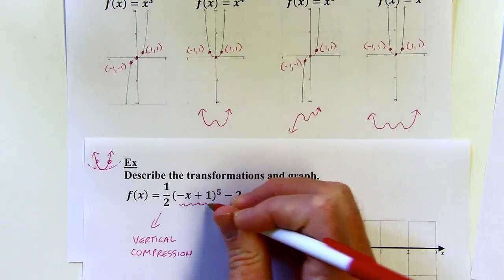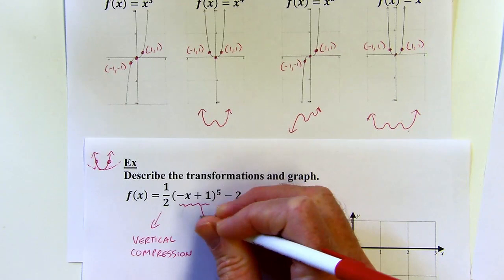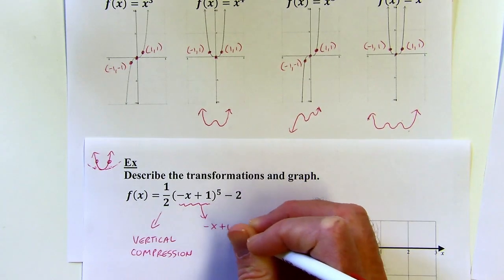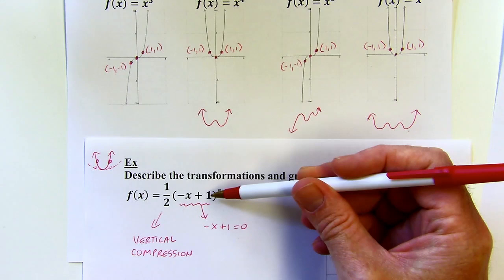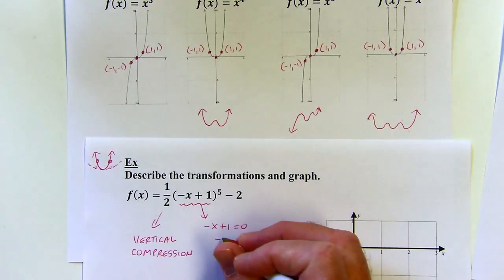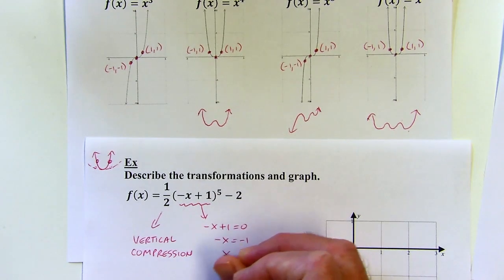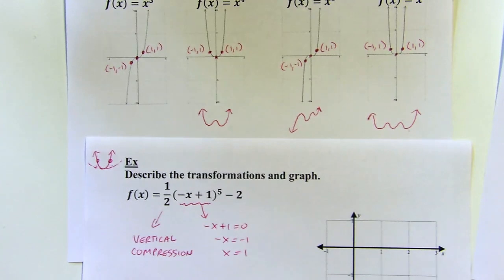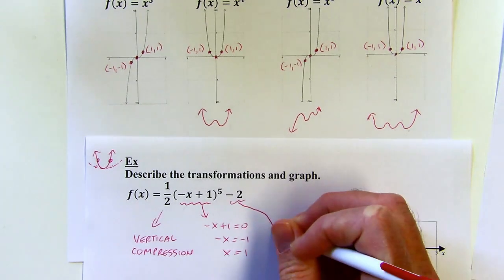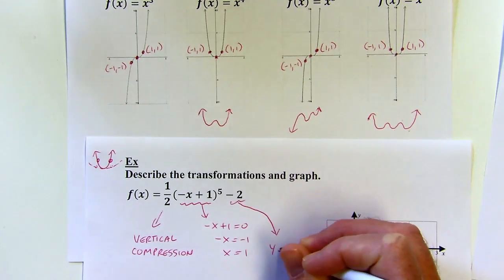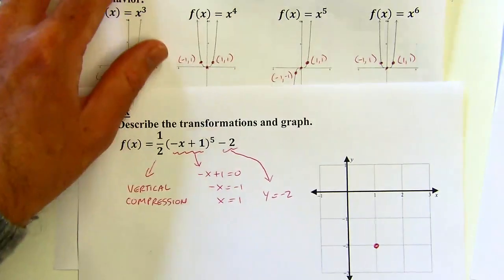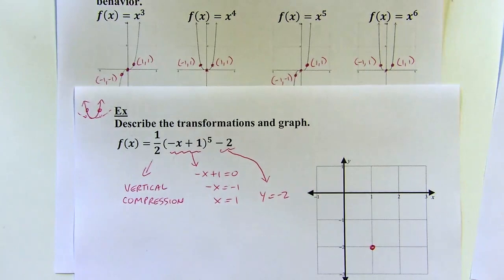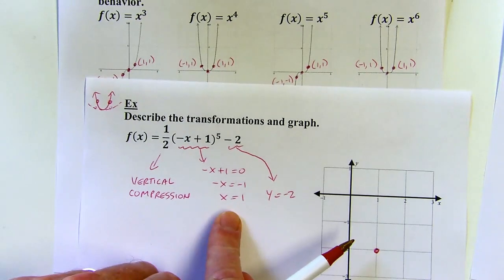Let's find the center — not the vertex, but the center. I'm going to take this, set it equal to zero. That negative needs to come with that — it's not as simple as just changing the sign of the one; I want to solve this for x. So x is going to equal one, and then y is negative two. So that's going to be my center: (1, -2). And that also tells me I've shifted everything right one, down two.